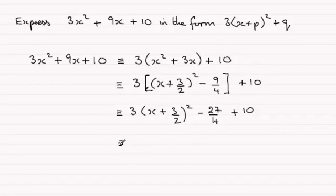And cleaning this up further, we've got the first term, 3 lots of x plus 3 over 2, all squared. And then minus 27 over 4 plus 10. Think of 10 in quarters as 40 over 4. 40 over 4 minus 27 over 4 is plus 13 over 4, 13 quarters.